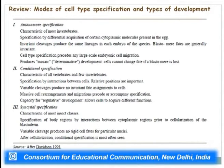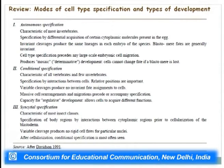In insects, a superficial cleavage occurs where nuclei divide in the cytoplasm to produce a syncytium, and later cytoplasmic bridges form and fuse to give rise to different cells. Before cellularization there is a syncytial appearance, and at that time fate is not yet determined — variable cleavages produce no rigid cell fates for particular nuclei. When cellularization occurs, they usually follow determinate or conditional specification.